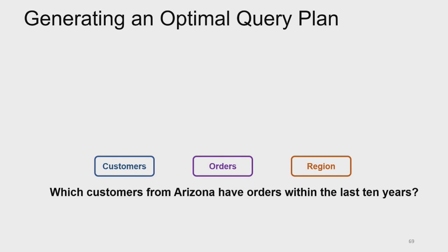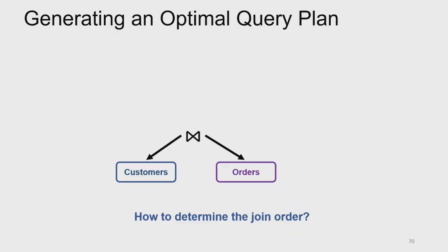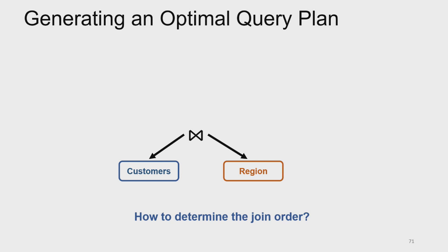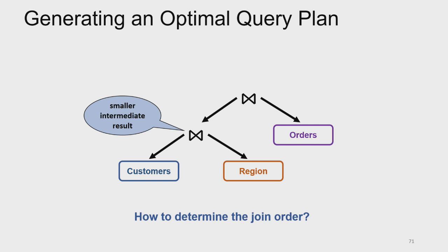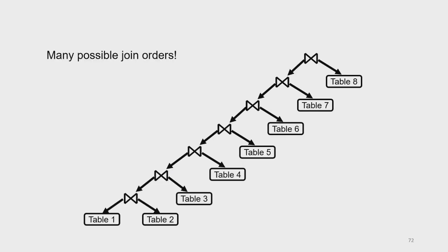When the optimizer looks at this query plan, it must decide the join order. For example, we could first join customers and orders, then join with regions. Or we could join customers and regions first, getting a smaller intermediate result, then join with orders. Depending on the query or number of relations, query plans can be very complex, making it harder for the optimizer to find an efficient plan. Query optimization has been a core problem in the database community for years — especially hard because optimizers must produce good plans with very limited understanding of the underlying data.